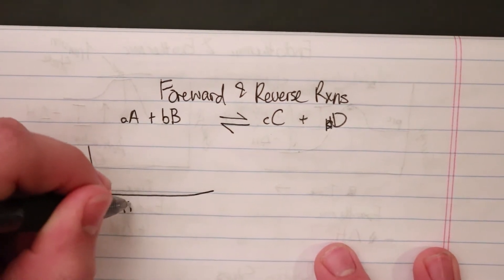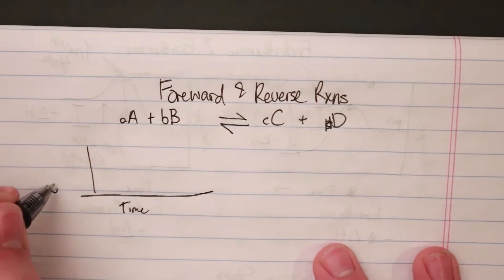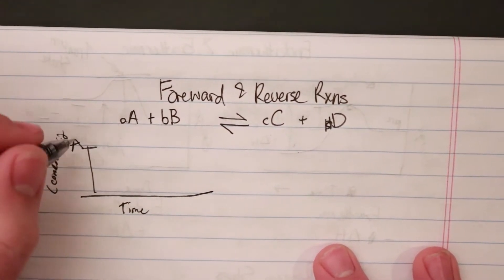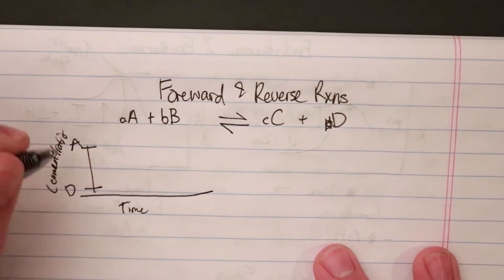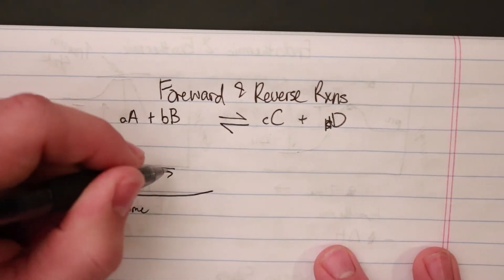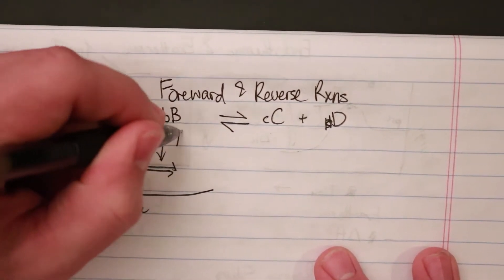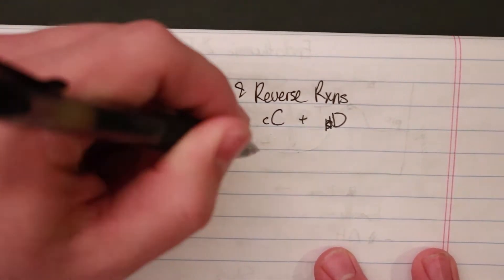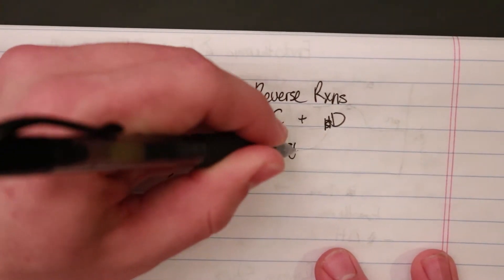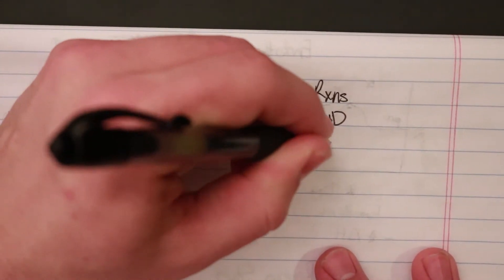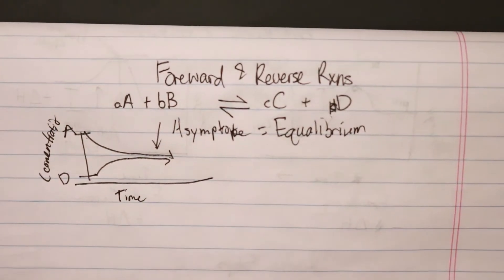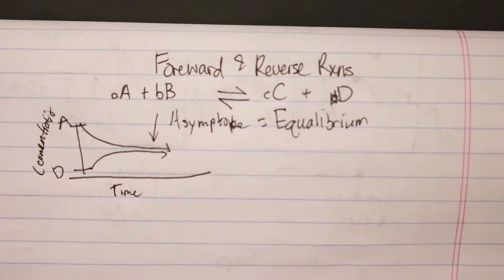If we have time and concentration, we're going to start with A up here and D down here. We will see that the lines will do something like this. As they asymptote out, the asymptote equals the equilibrium. The equilibriums can cross, and you can have more products than reactants at equilibrium.